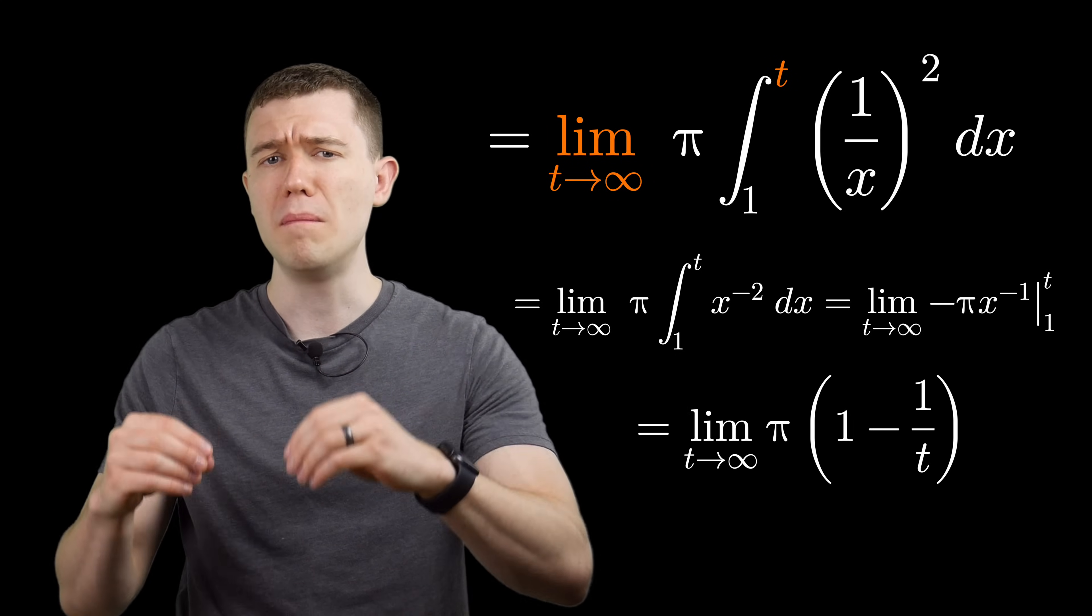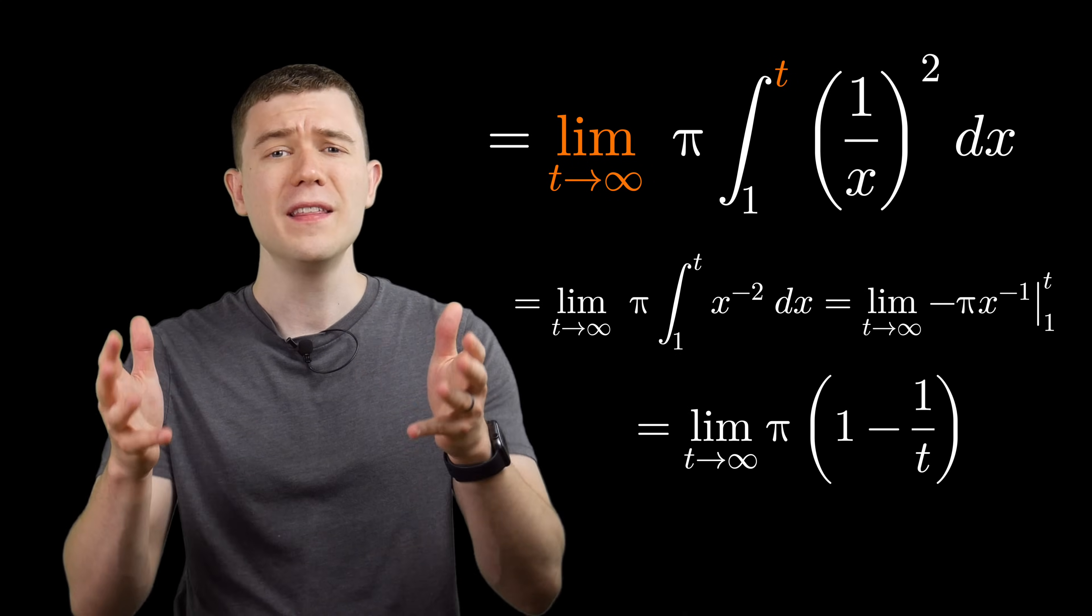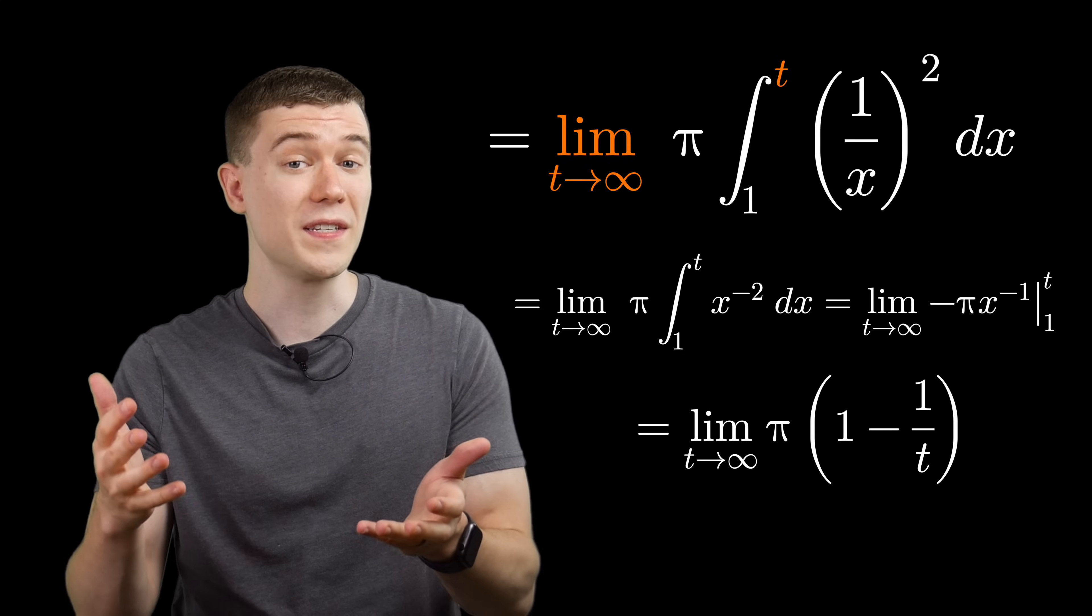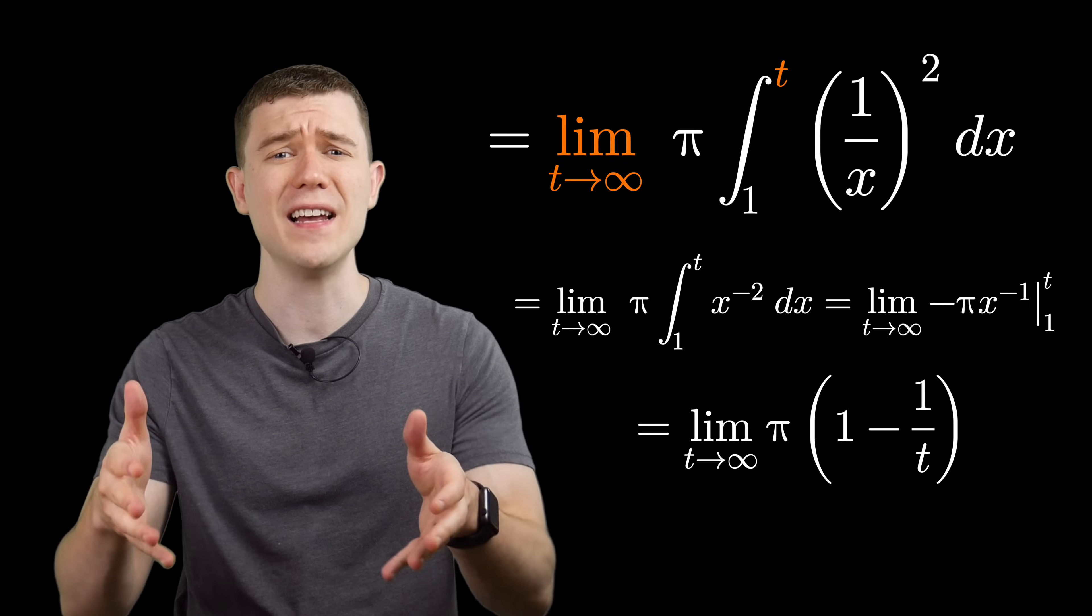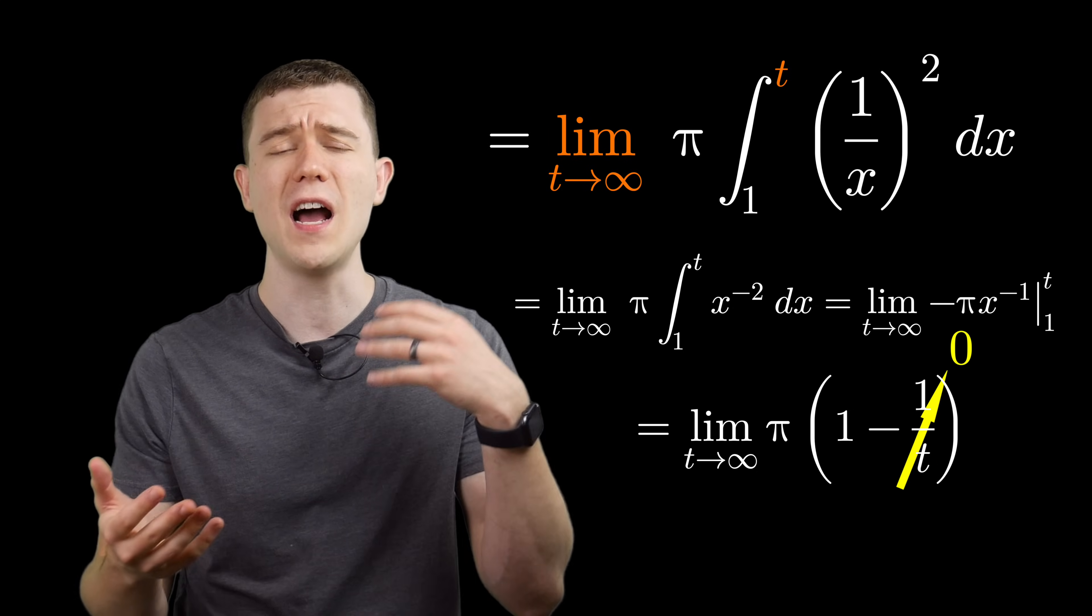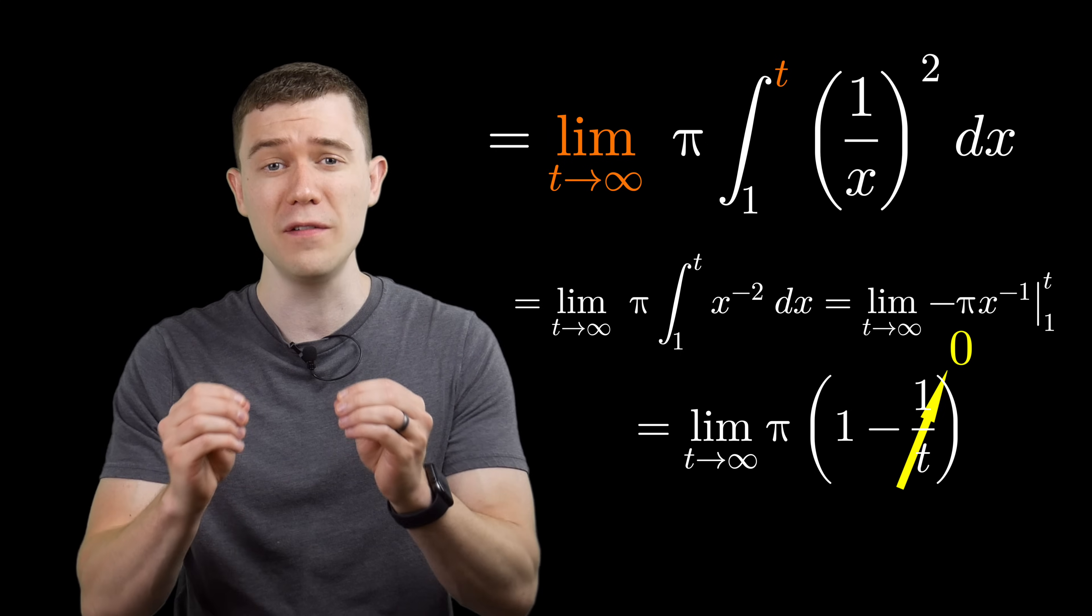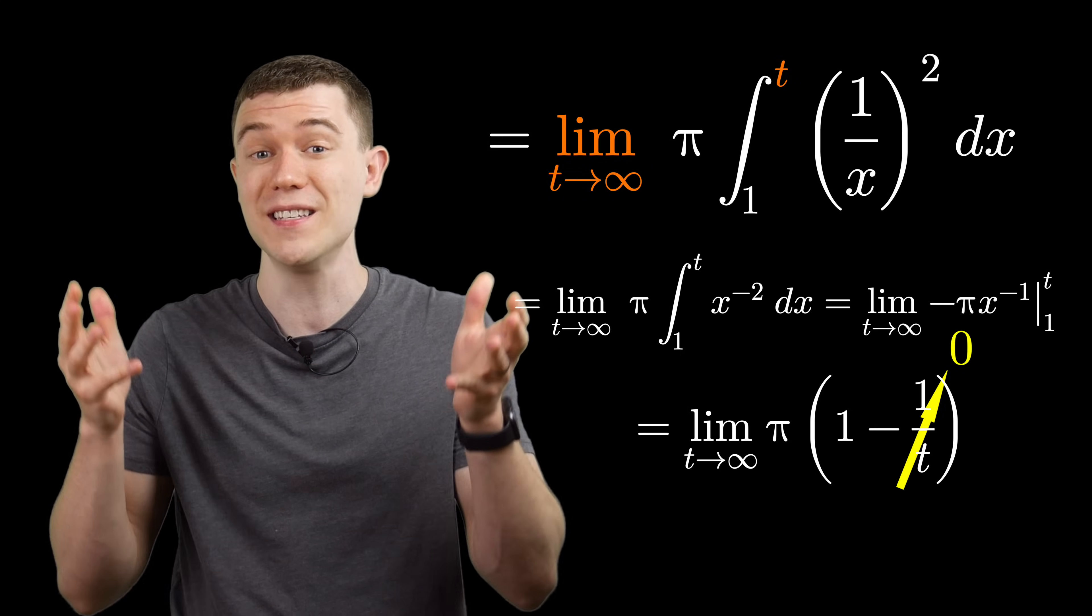Plug in the upper value, minus plug in the lower value. Then all we have to do is take this limit towards infinity. We'll see that the one over the constant tends toward zero. One times that pi that's left over is pi. And so the volume of this solid of revolution is pi.